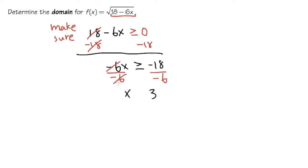However, we divided by a negative number. Therefore, I have to take the inequality and switch it. Originally it was greater than or equal to; now it becomes less than or equal to. Make sure you do the switch whenever you multiply or divide by a negative number in an inequality. So x has to be less than or equal to 3. Let me show you a couple of ways to present the answer.